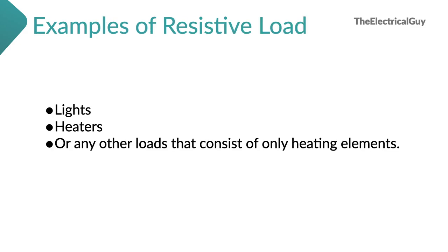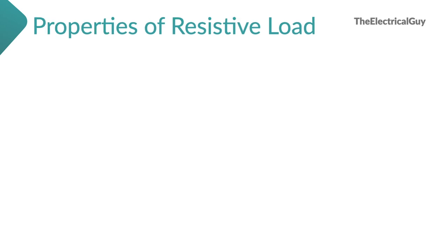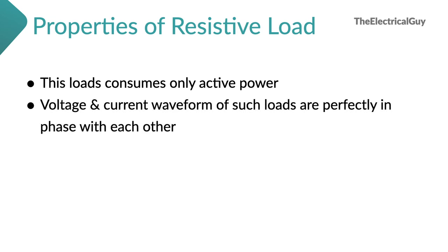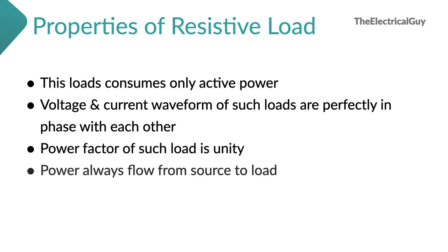Now let's look at the examples of resistive load, and let's see what are the properties of resistive load. These loads consume only active power; voltage and current waveforms of such loads are perfectly in phase with each other; power factor of such load is unity; and power always flows from source to load. You can take a screenshot of this slide for your quick reference.